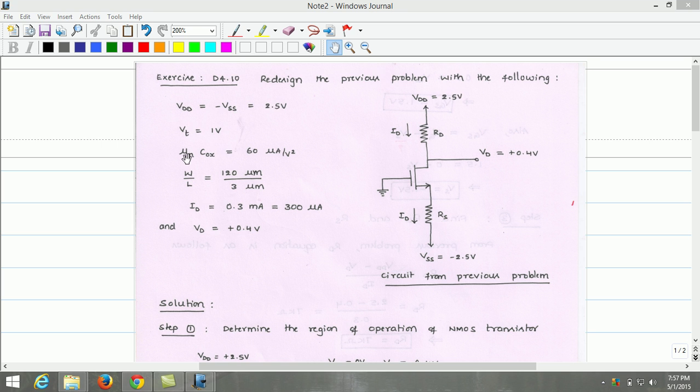of the MOSFET is 1V. The process transconductance parameter of the NMOS transistor μnCOX is 60μA per volt square.